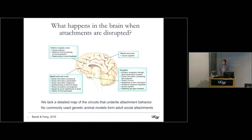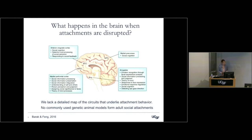So what is our understanding of what happens in the brain when attachments are disrupted? Looking at human imaging studies in patients who have very significant attachment disorders — this is from a review looking at patients with neurodevelopmental disorders like autism, using human imaging data — we have this sort of global view of the brain.